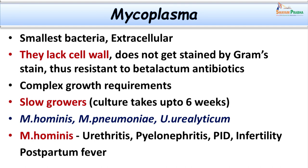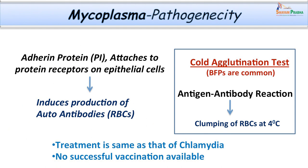Ureaplasma is also an important causative agent of non-gonococcal urethritis. Mycoplasma hominis can cause non-gonococcal urethritis, pyelonephritis, pelvic inflammatory disease, infertility, and postpartum fever. Mycoplasma has an adherent protein that attaches to receptors on host cell mucosal linings and then induces production of autoantibodies against the I antigen of RBCs. This forms the basis for the cold agglutination test in Mycoplasma infections, where the antigen-antibody reaction takes place at 4 degrees centigrade. Biological false positive reactions can sometimes occur in this test.